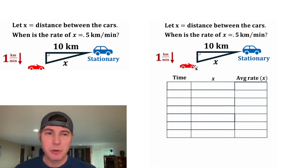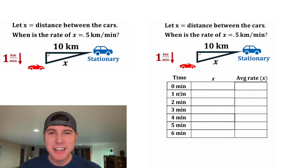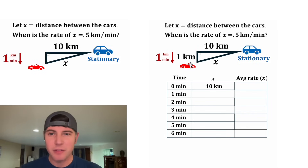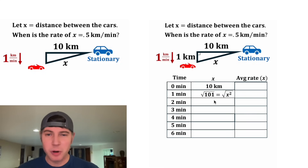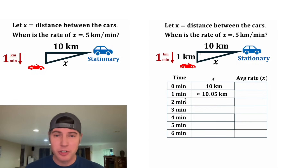First, I wanted to explore it without calculus. We can make a table where we have time, the distance x, and then the average rate of x. We can put down various times for all the minutes from zero to six. At time zero, the distance x between the two cars is exactly 10 kilometers. After one minute, the convertible sports car has traveled one kilometer. Using the Pythagorean theorem: one squared plus 10 squared equals x squared, giving x equals the square root of 101, approximately 10.05 kilometers.